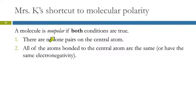So a molecule is nonpolar if both of these conditions are true. There are no lone pairs on the central atom. If you see lone pairs on the central atom, it's going to be polar. If all of the atoms bonded to the central atom are the same, or if they have the same electronegativity. The thing is that if all the atoms have the same electronegativity, they're spread around evenly, and there's no lone pairs, it's going to be nonpolar. So both things are true. It's nonpolar. Let's do an example.